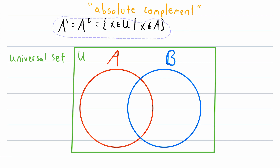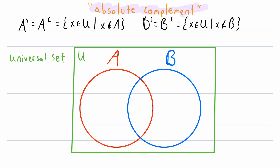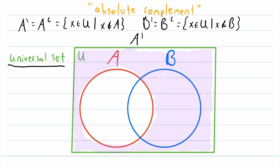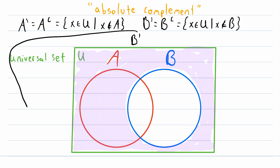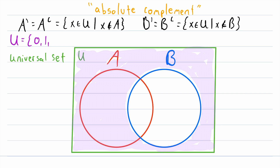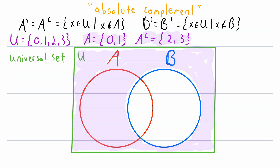We could just as easily replace A with B. In the Venn diagram, the absolute complement of A is everything in the universe that is not in A — that's what I'm shading now. The absolute complement of B contains all elements in the universe that are not in B. For a quick example, let's say the universal set is {0, 1, 2, 3}. With that universal set and a given set A, we can determine the absolute complement of A.